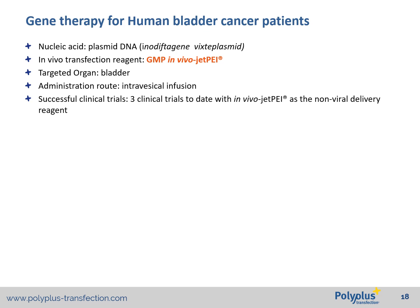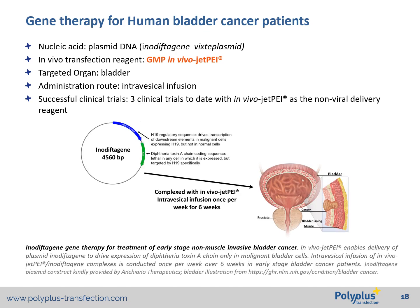These in vivo-jetPEI DNA nanoparticles are infused in the bladder of patients and taken up by bladder cells through endocytosis. Once inside the cells, the plasmid DNA is only activated in bladder cancer cells that overexpress H19 transcription factors, because the H19 transcription factor is necessary to bind to the H19 regulatory sequence that will drive expression of the diphtheria toxin A, which inhibits protein synthesis and leads to cell death of the cancer cells.